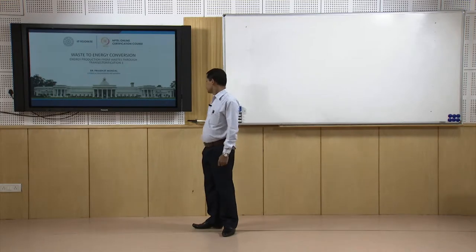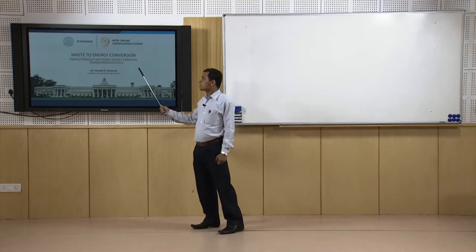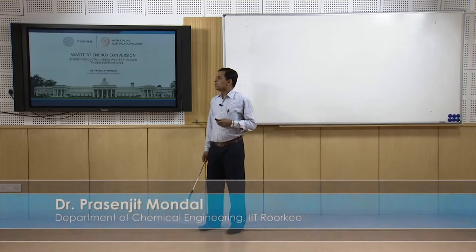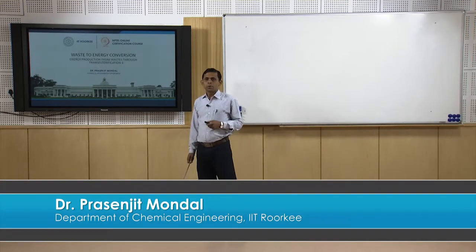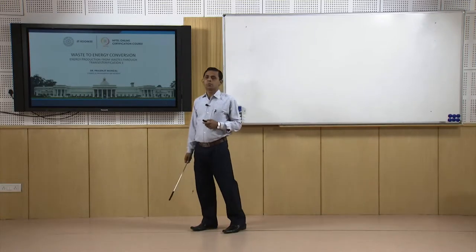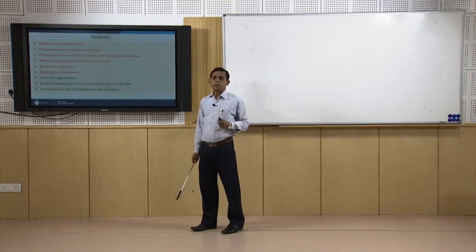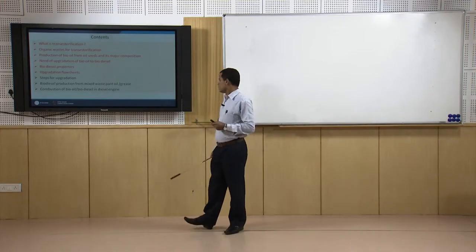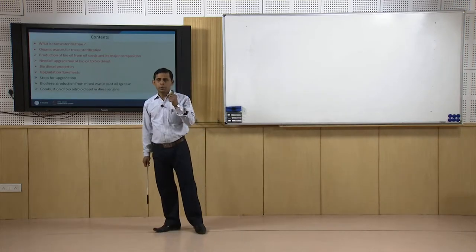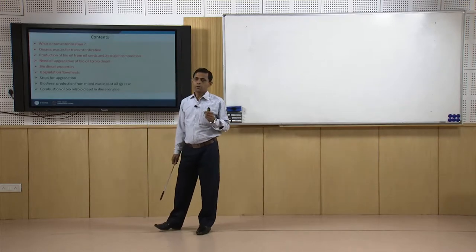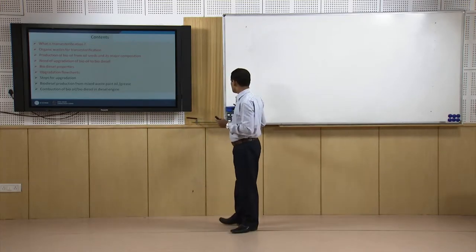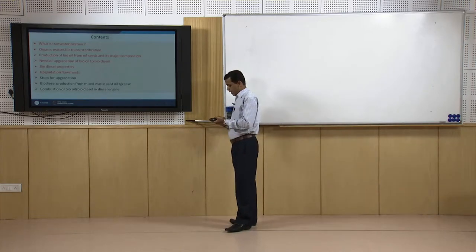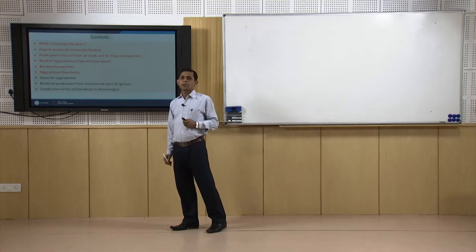Good morning. Now we will start discussion on a new module: energy production from waste through transesterification. So far we have discussed different thermal and biochemical routes for the production of energy from waste and biomass. Now we will concentrate on a chemical route. Transesterification is an important chemical route for waste-to-energy conversion, where waste containing triglycerides or bio oil can be converted to esters — fatty acid alkyl esters — which are the components of biodiesel.